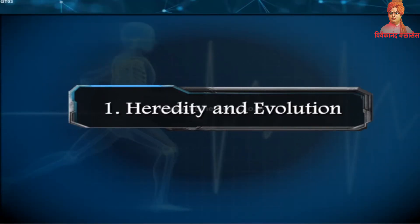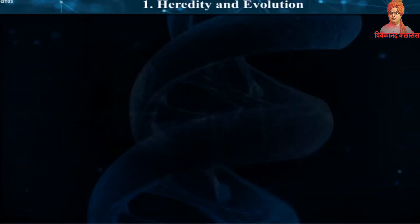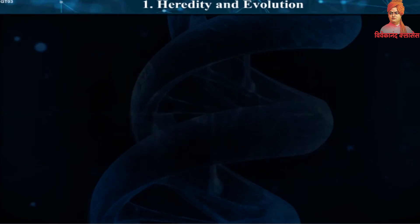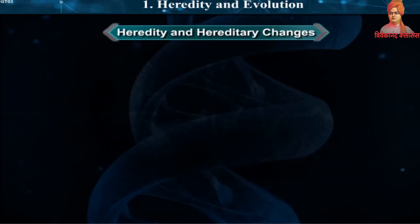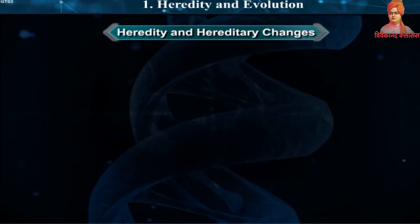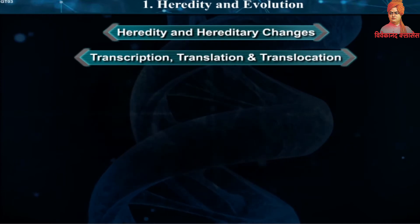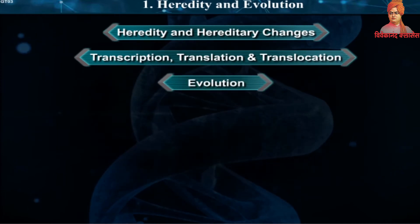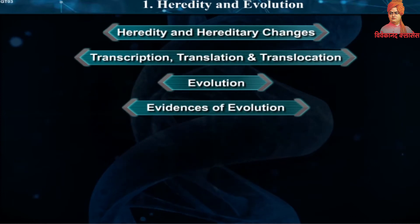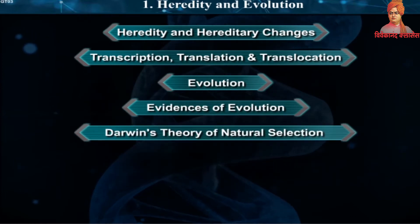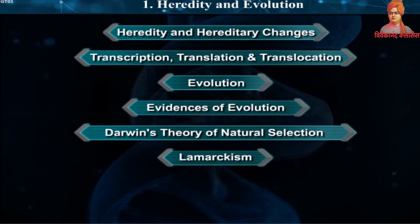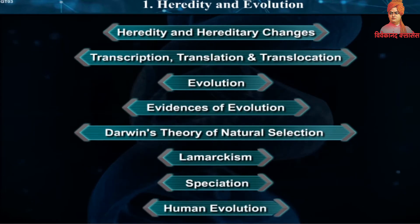Chapter 1: Heredity and Evolution. In this chapter we shall learn some important topics like Heredity and Hereditary Changes, Transcription, Translation and Translocation, Evolution, Evidences of Evolution, Darwin's Theory of Natural Selection, Lamarckism, Speciation, and Human Evolution.